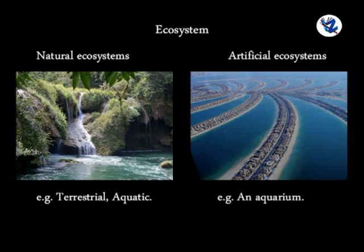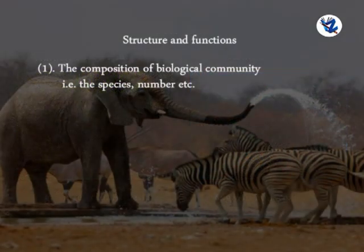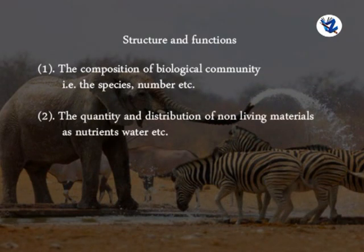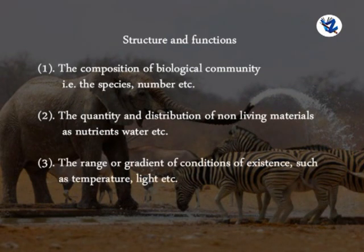For the study of any ecosystem, we have to consider its structure and function. The structure includes: first, the composition of the biological community, i.e., species, numbers, etc.; second, the quantity and distribution of non-living material such as nutrients, water, etc.; and third, the range or gradient of conditions of existence such as temperature, light, etc.